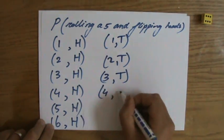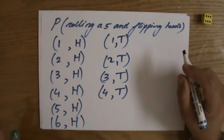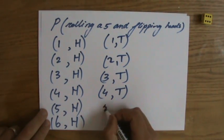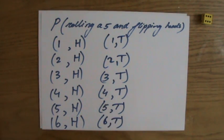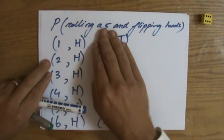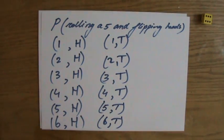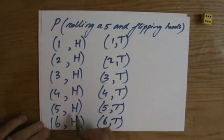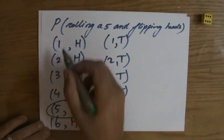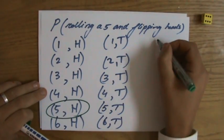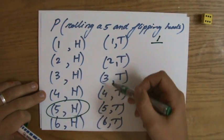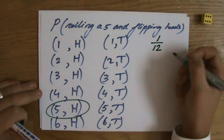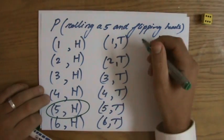You see, this is taking quite a long time — imagine if you have five dice and six coins. Just to show you: a five and tails, and a six and tails. So if the question is, what is the chance of rolling a five and flipping a head — that's a combined event — only one of them is good. So I have one success out of twelve possibilities.